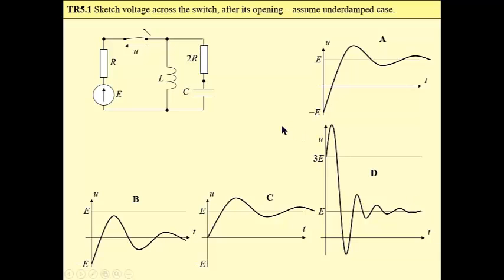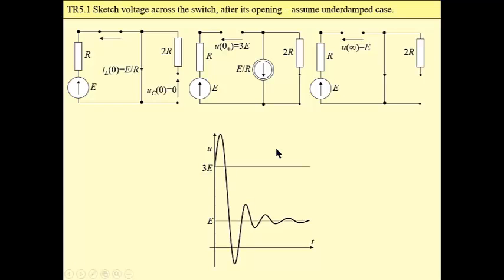We have a second-order circuit presented here and our task is to sketch voltage across the switch. For the underdamped case there are four options. To answer which one is correct we have to find boundary values, which is quite an easy task.